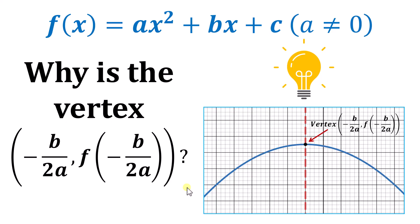Recall that the graph of a quadratic function is a parabola. If a is positive, the parabola opens up and the vertex is the lowest point on the graph. If a is negative, the parabola opens down and the vertex is the highest point on the graph, as shown here on the right.